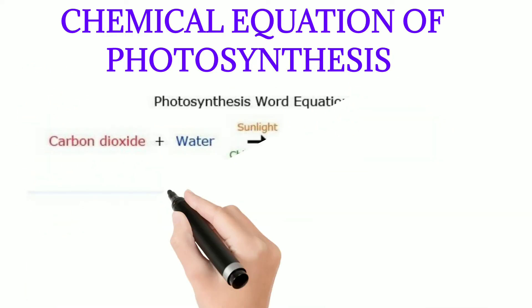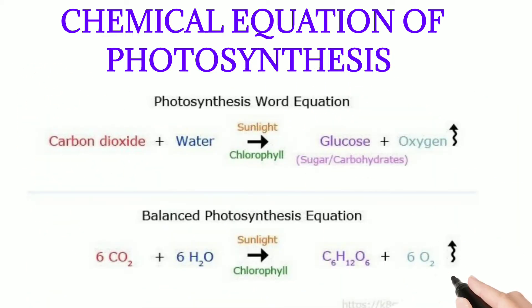Here are some pictures which show the chemical and word equation of photosynthesis. I will read out the photosynthesis word equation: carbon dioxide plus water in the presence of sunlight and chlorophyll gives glucose in the form of